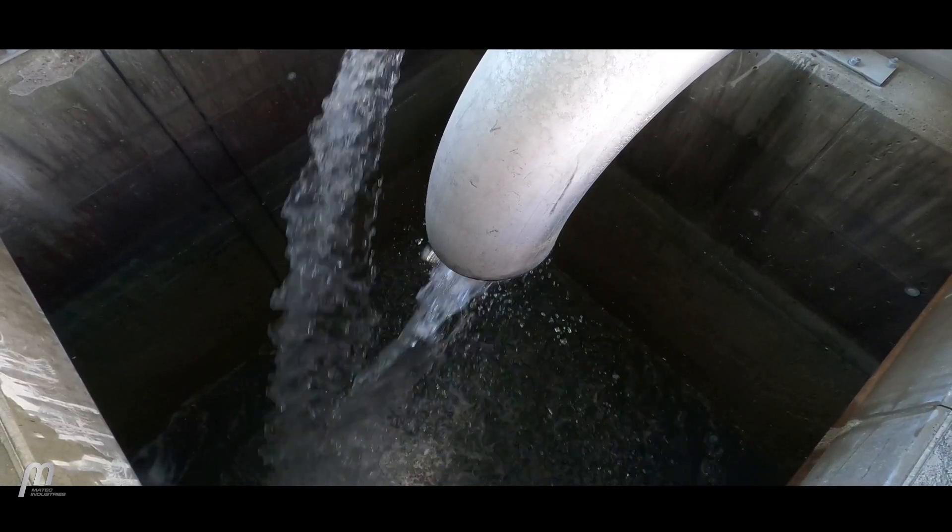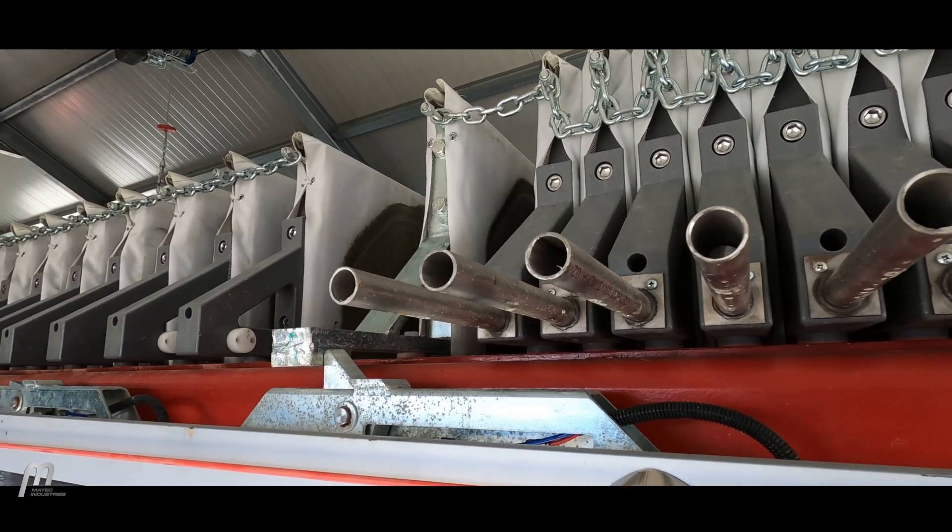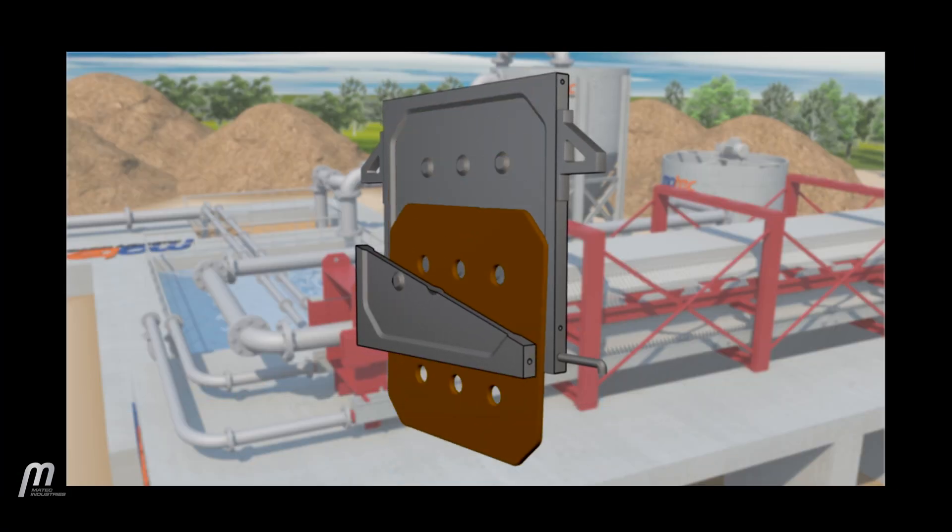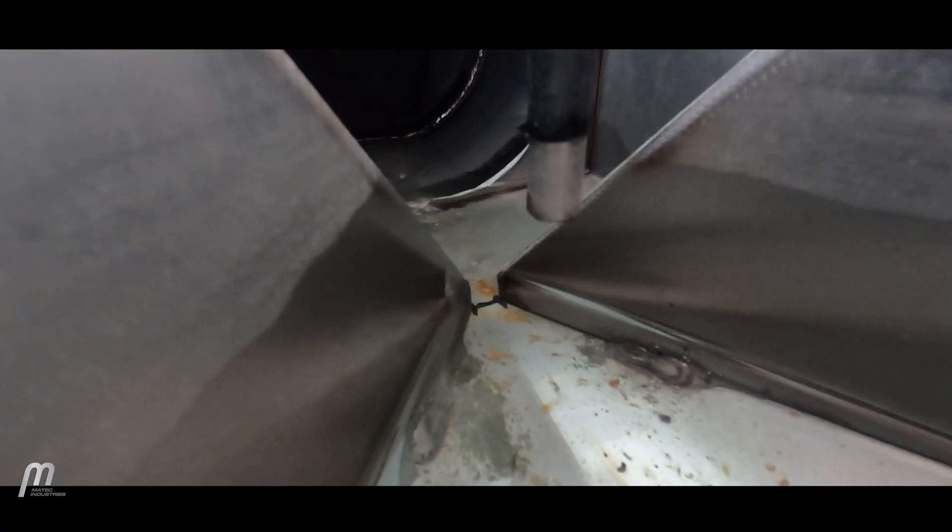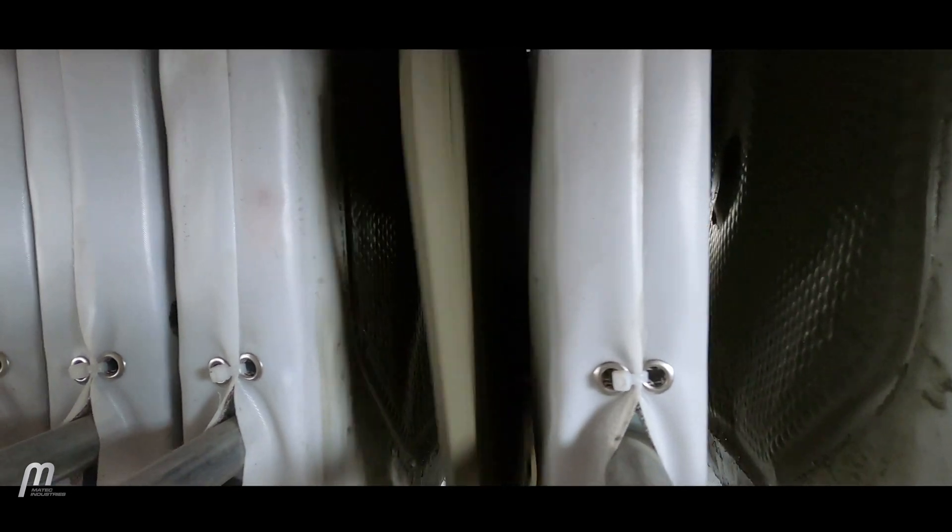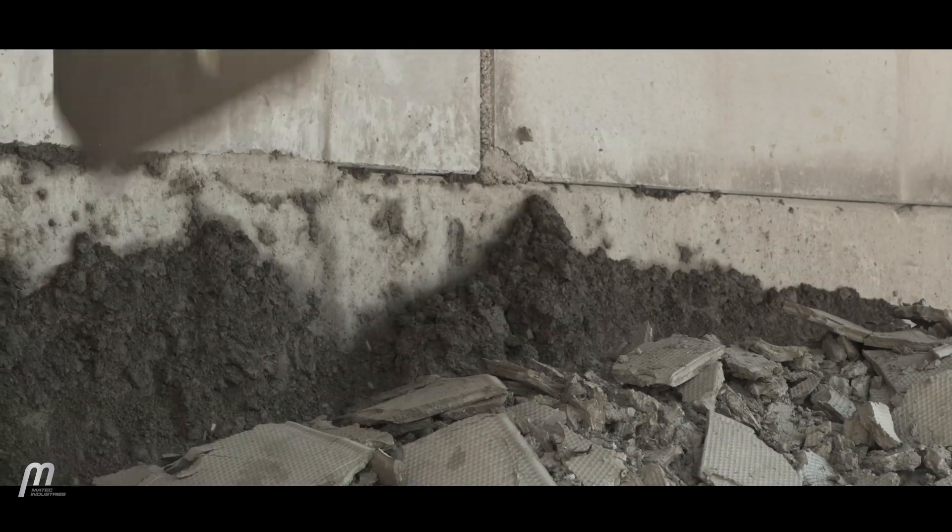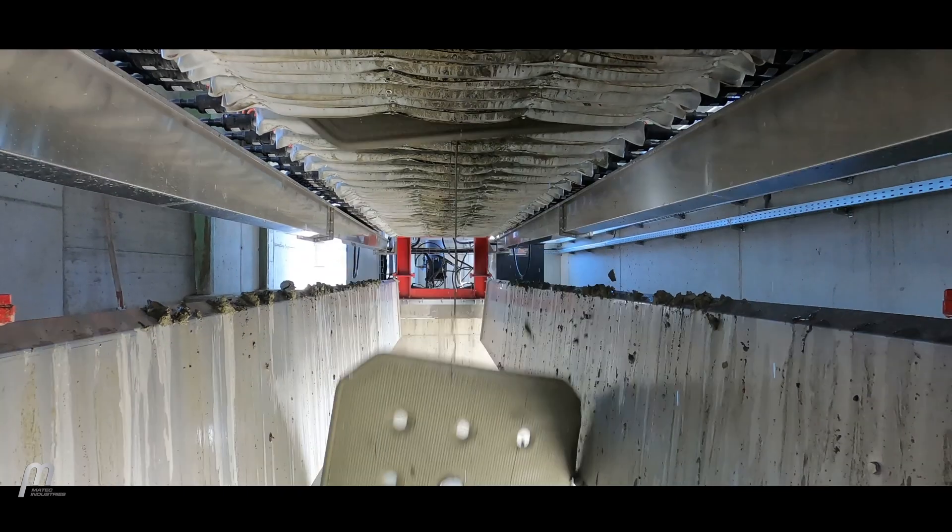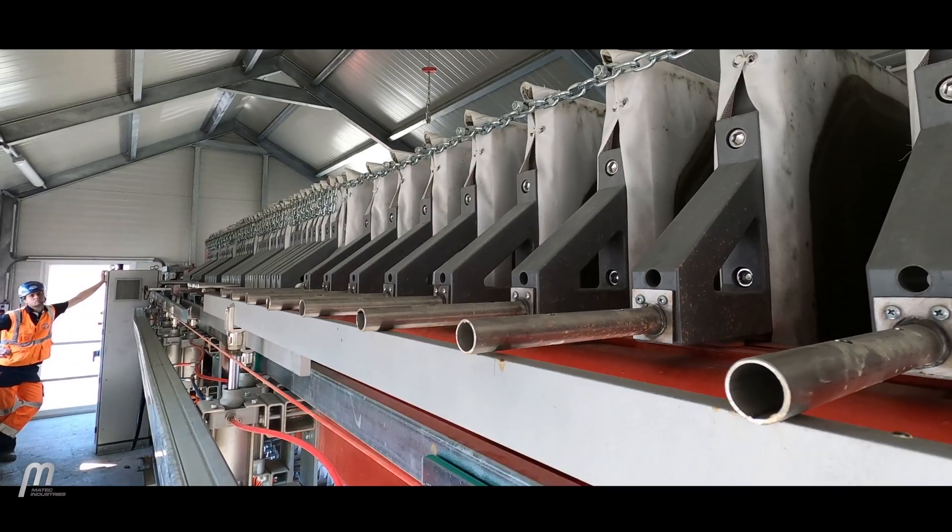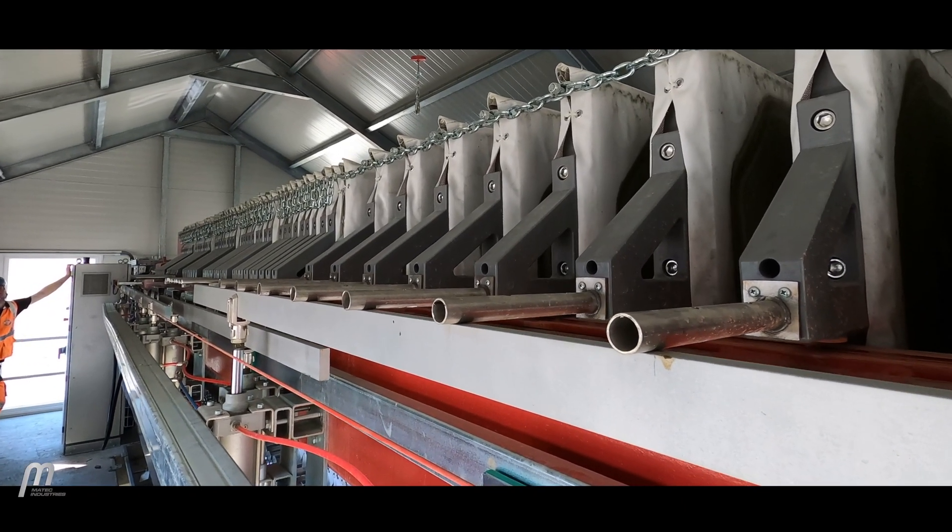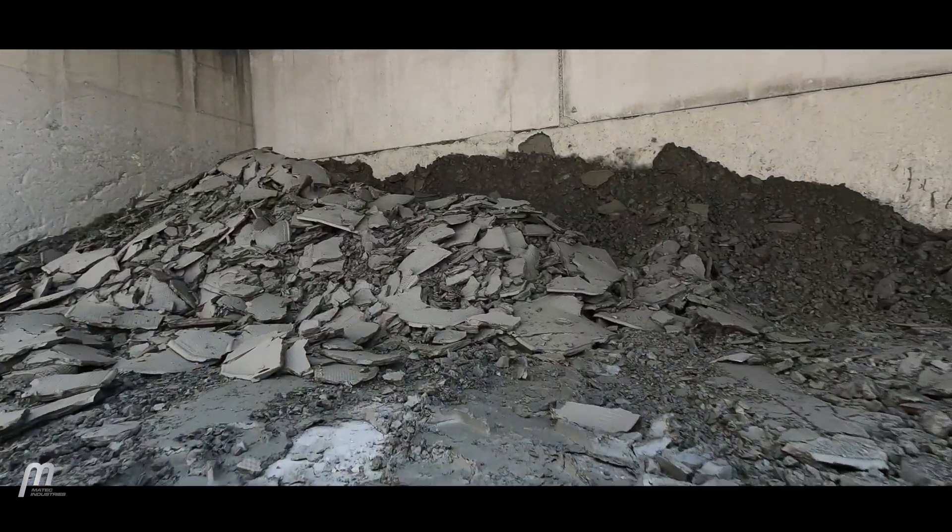The filter press ends its cycle when a probe located at the drainage point no longer senses the presence of water. Now that dehydration is achieved, the plate pack is opened and the dry cakes fall to the ground, leaving the cloths clean and ready for the next filtration cycle.